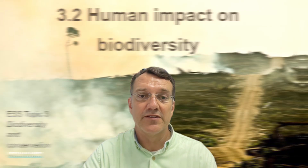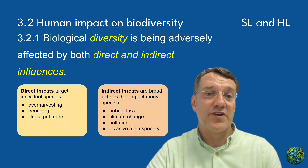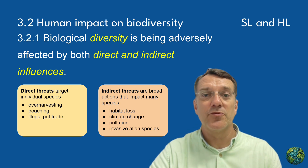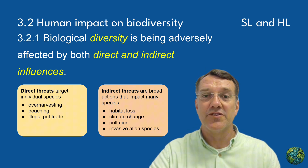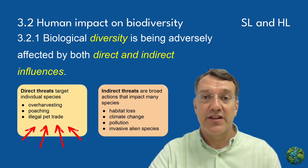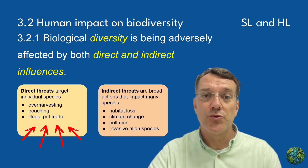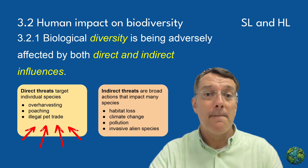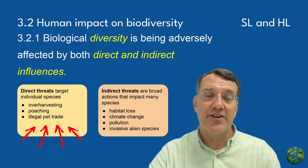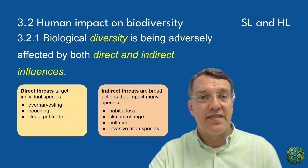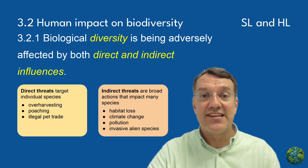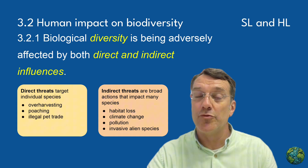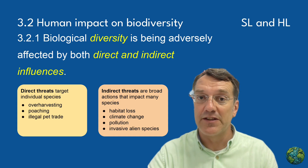Let's get into it. Biological diversity is being adversely affected by both direct and indirect human influences. Direct threats specifically target individual species like over-harvesting, poaching, and the illegal pet trade. These activities intentionally remove organisms from their natural habitats for human use or profit.